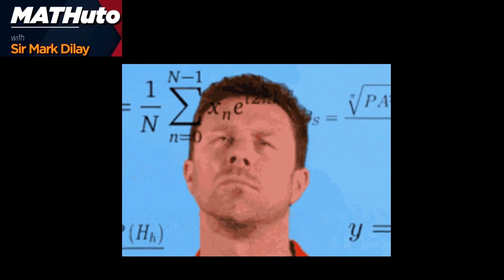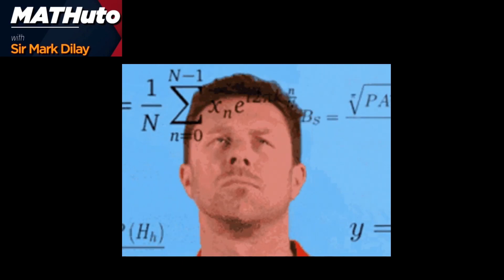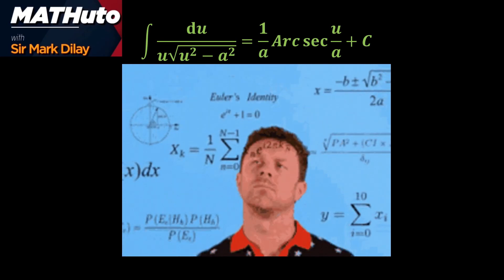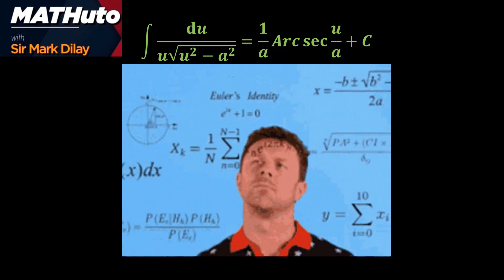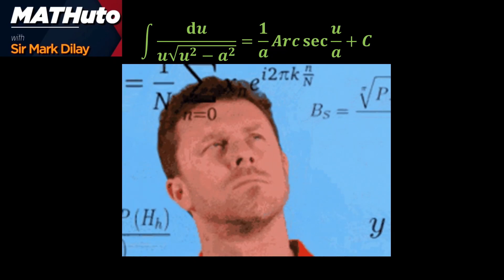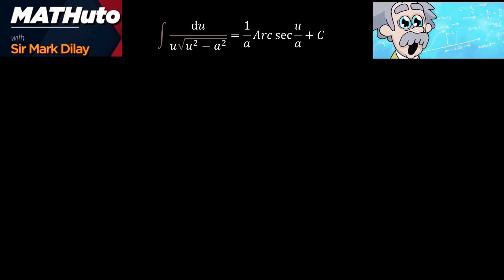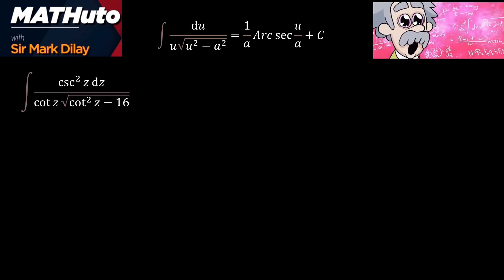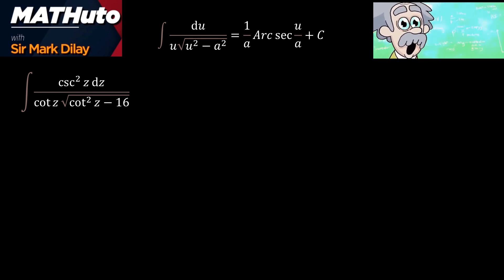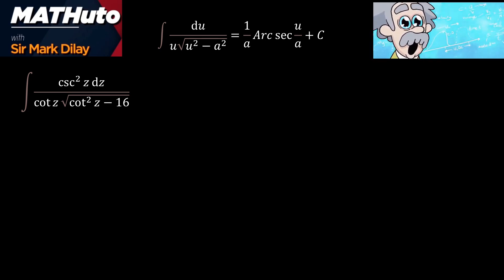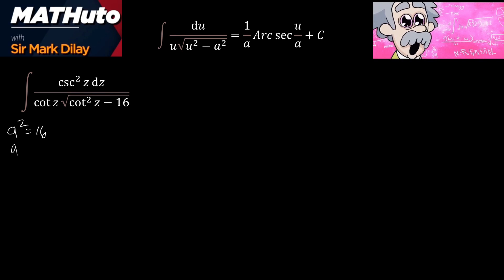For the last formula under inverse trigonometric functions, we have the integral of du over u times the square root of u² minus a². This gives us (1/a) arcsec(u/a) plus C. As you can see, the denominator is written in radical form. Let us have our first example: the integral of cos²(c)·dc over cot(c) times the square root of cot²(c) minus 16.